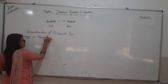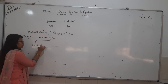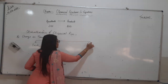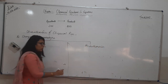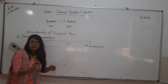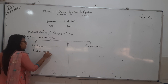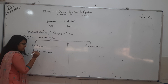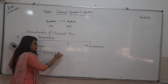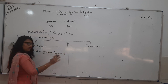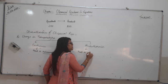Change in temperature can lead to two types of reactions: the first is exothermic reaction, and the other is endothermic reaction. Exothermic reactions are those in which heat is evolved. When heat is evolved, that is exothermic. And when heat is absorbed, that is endothermic.